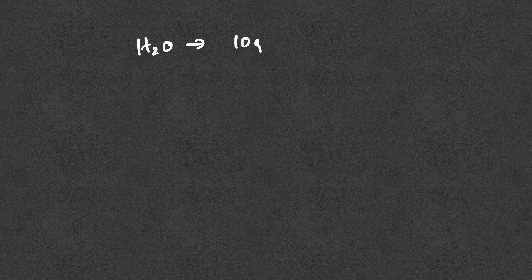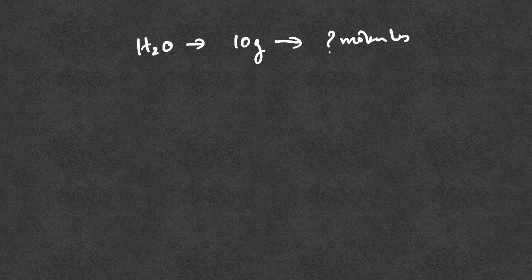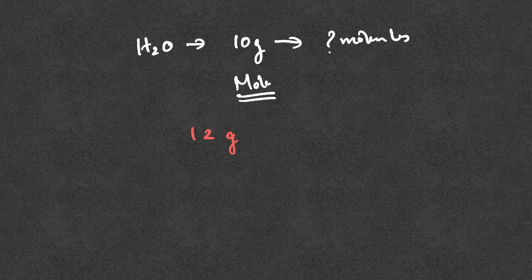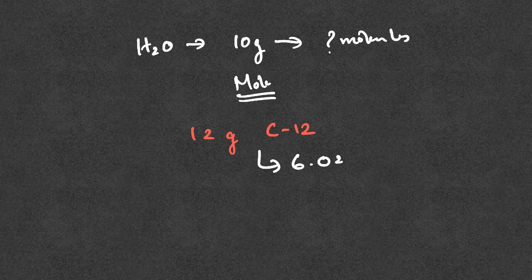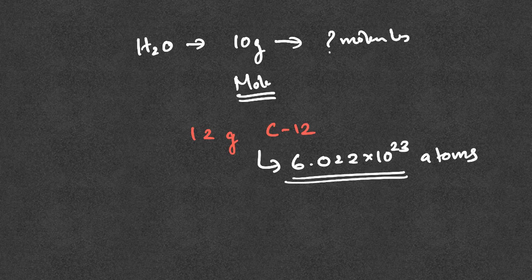For example, we have water, H₂O. If we have 10 grams of water, how many molecules of water do we have? The definition of 1 mole of any substance is equivalent to 12 grams of carbon-12 isotope, which is equal to 6.022 into 10²³ atoms.